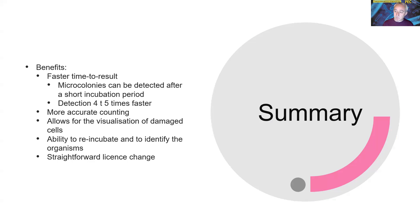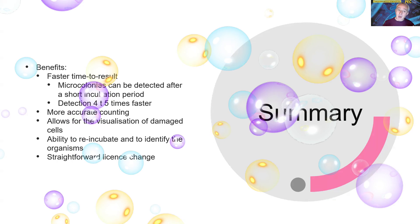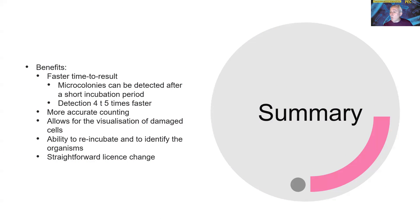In summary, what we've done is have a look at the adoption of a rapid microbiological method for testing water. We've seen that we've got better data more quickly. We've got faster time to result, more accurate counts, good robustness. And generally, the detection times were at best four to five times faster. We're also picking up slightly damaged cells, which you probably couldn't pick up from the conventional method. And we could also reincubate and identify organisms. We've also looked at how we might undertake regulatory or license change.